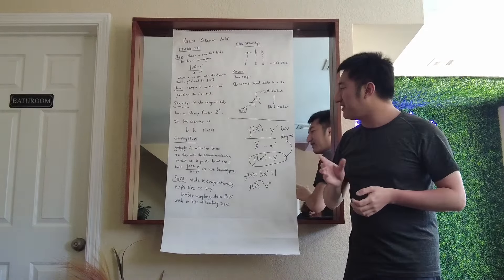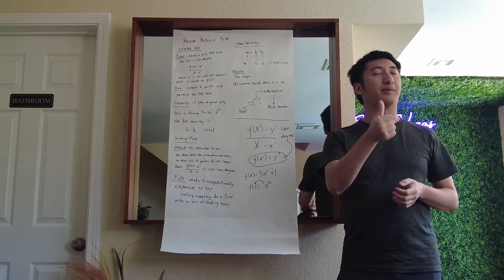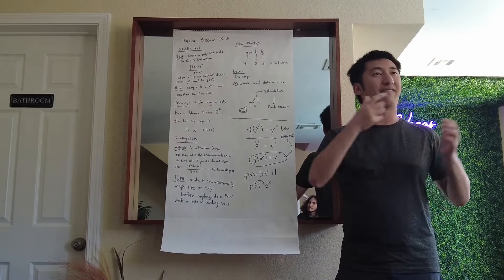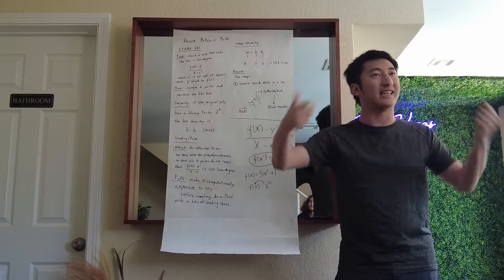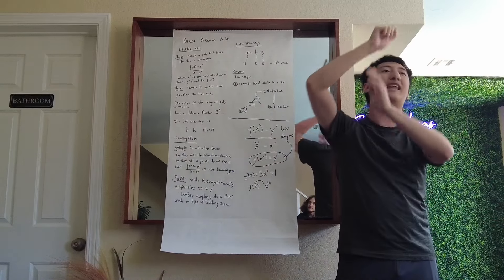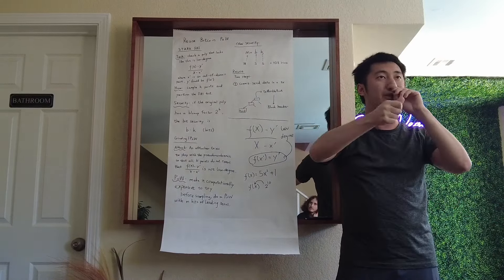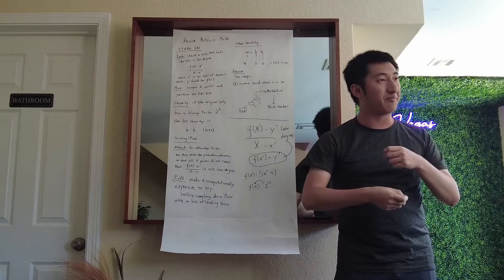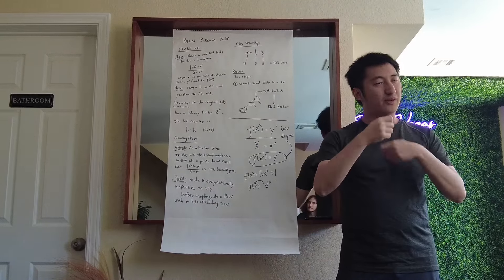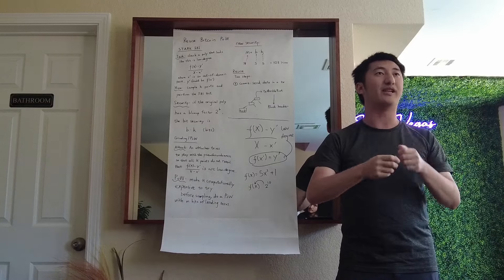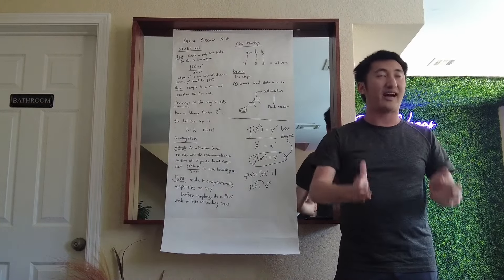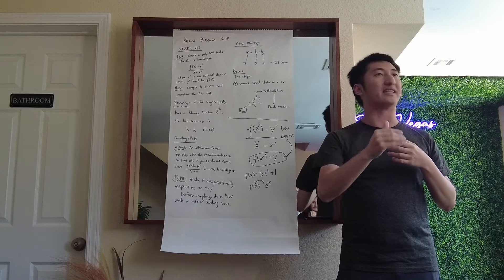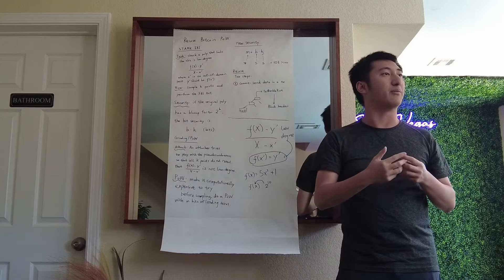There's going to be a computation overhead for the attacker. Because the attacker, every time, tries another polynomial, commits it, gets the hash value, and checks which k points will be revealed. If it's different, you try again. The prover needs to try many, many times, and eventually might find a polynomial that is not low-degree, but the k sampled points don't reveal that.